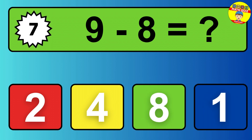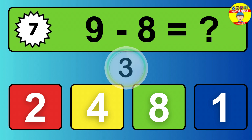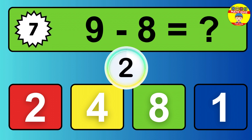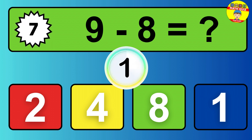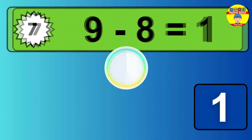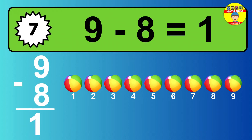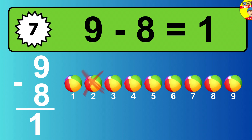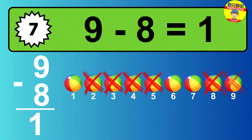Question seven. Nine minus eight equals what? So the answer is, nine minus eight is one. Let's count it. One.